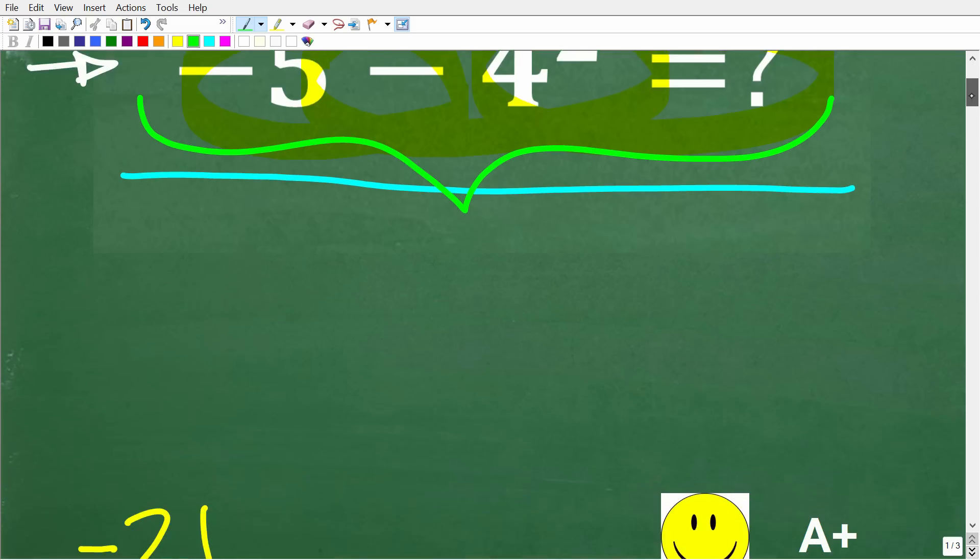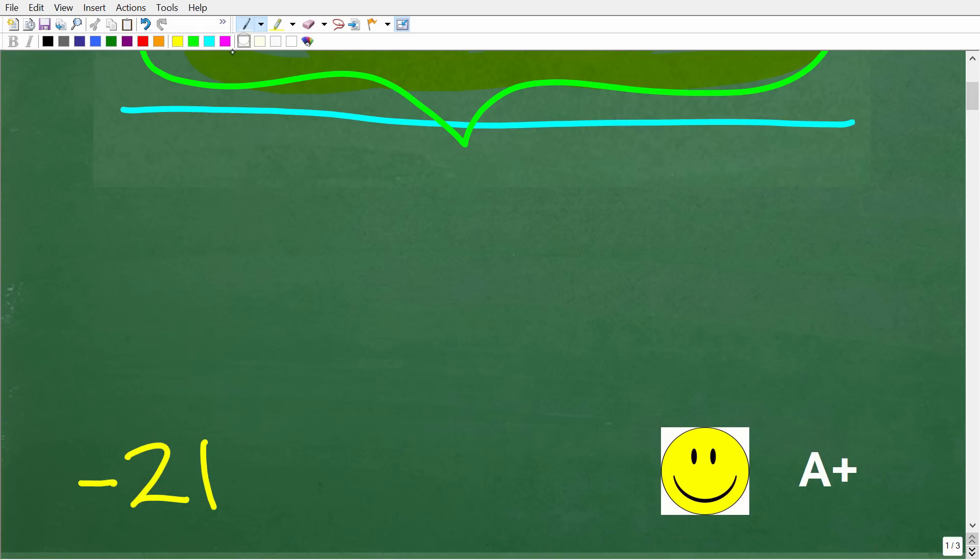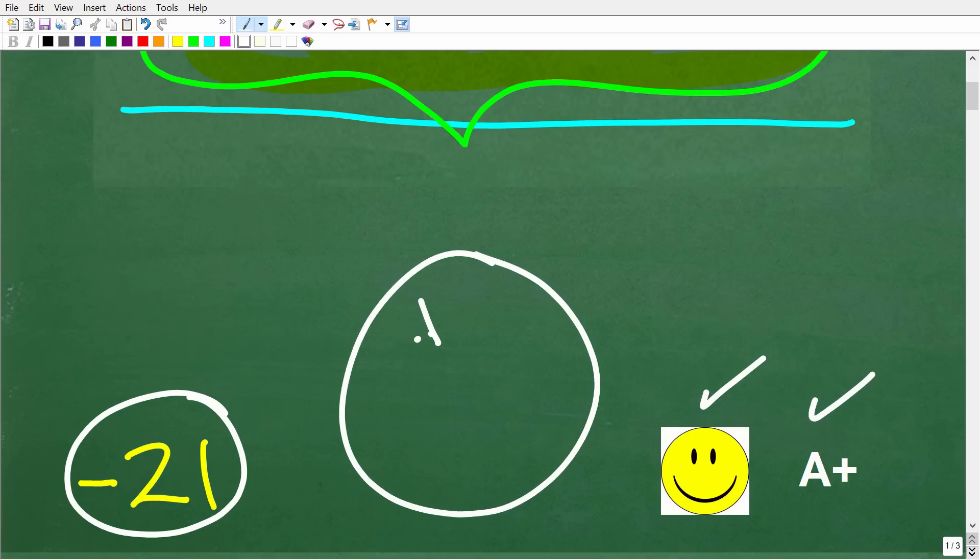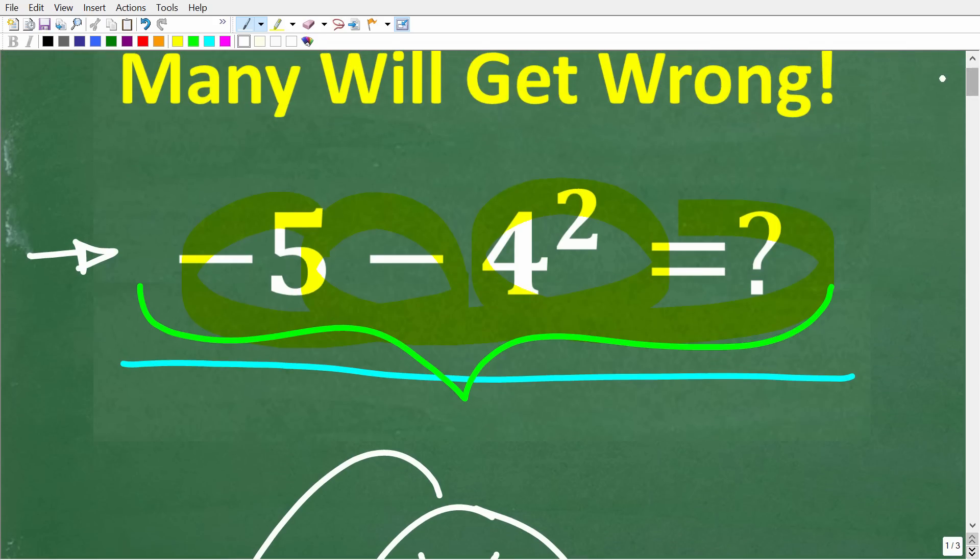Well, the correct solution is negative 21. All right, now, if you got that right, well, you definitely get a happy face and an A plus. And if you're like, I missed you too, math man, I got this right, this is so easy. Well, it's still possible that you got the right answer, but you may not really actually understand what to avoid when it comes to simplifying expressions like this. In other words, it's possible that you just got lucky on this problem.